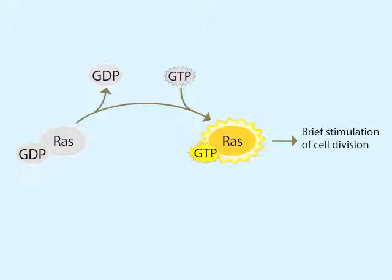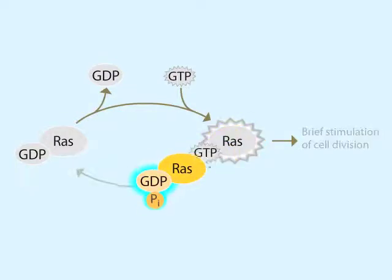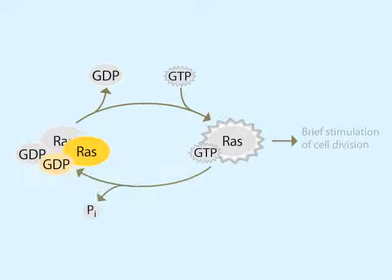An important part of RAS's function is an internal shut-off mechanism. Shortly after becoming activated, RAS hydrolyzes its GTP back to GDP, and in so doing, becomes inactive again and stops stimulating cell division.